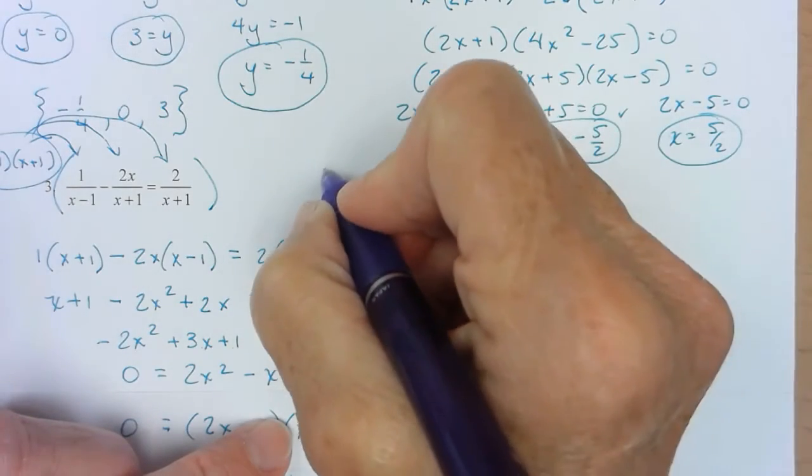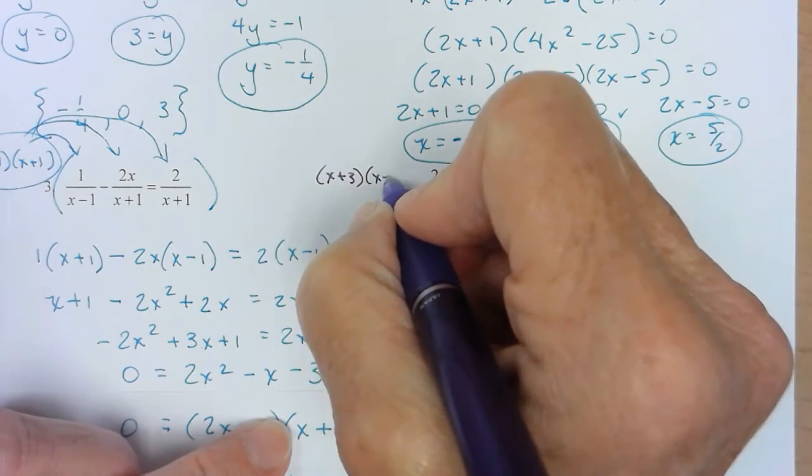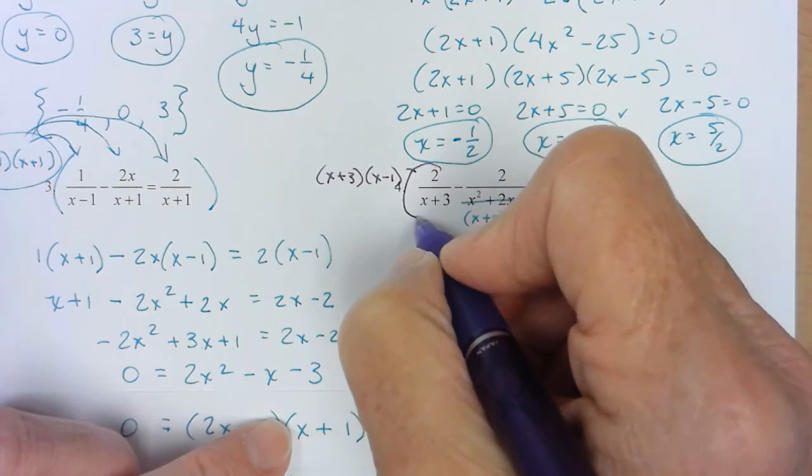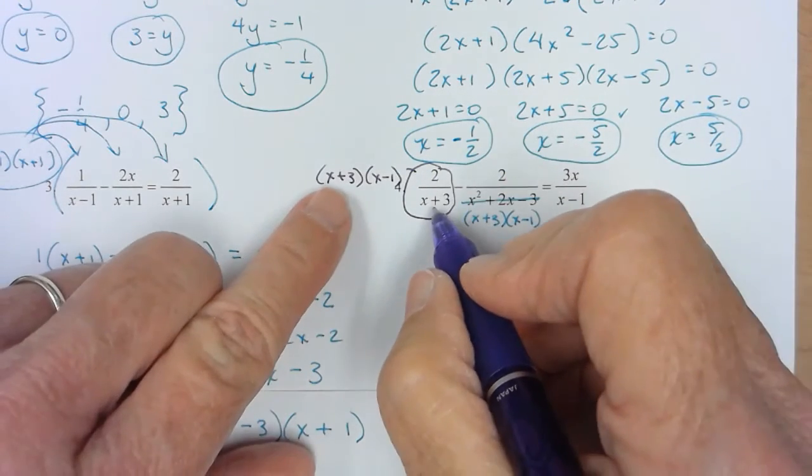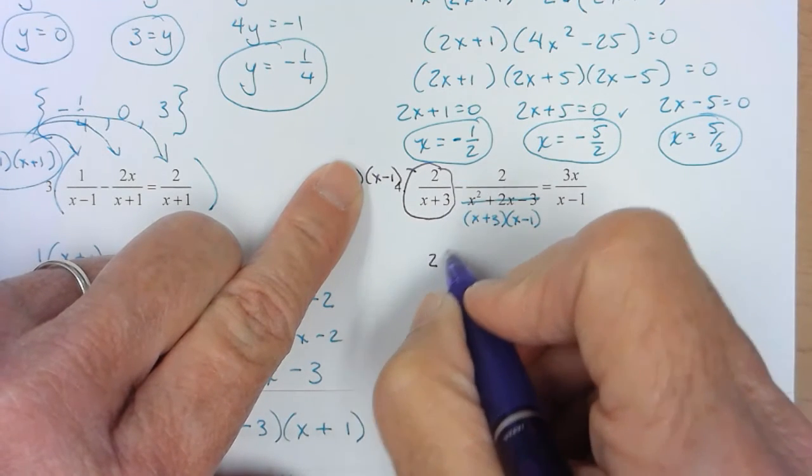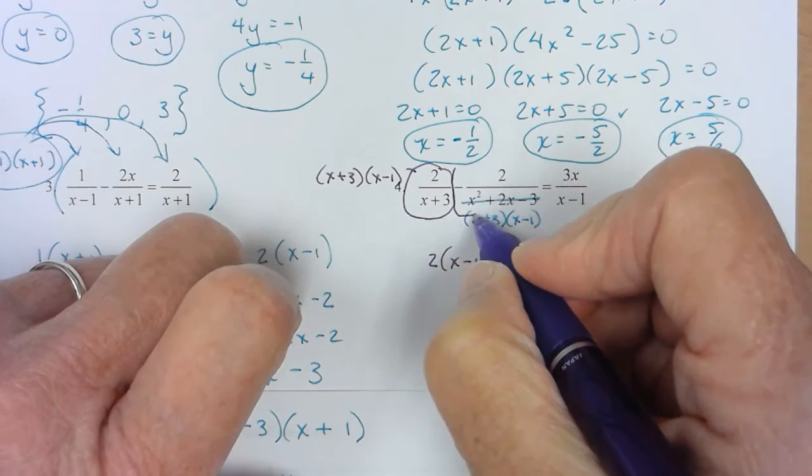Now I'm going to multiply by my LCD. But I'm going to multiply this fraction. I'll go ahead and do it first. So that times this. The x plus 3's cancel. So I'm going to have a 2x minus 1 left.